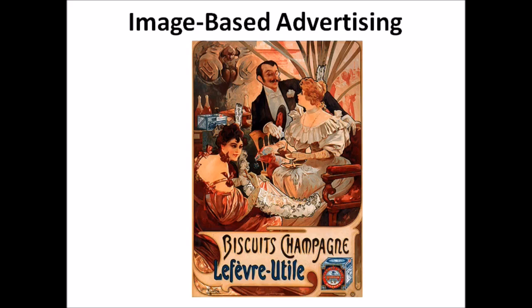For marketers who are selling image-based items such as home decor, clothing, or jewelry, image-driven sites like BuzzFeed, Pinterest, and Instagram are a great choice. Users will help promote items on these networks by recommending favorite items to their friends and followers. It's a great way to tap into the power of viral marketing.